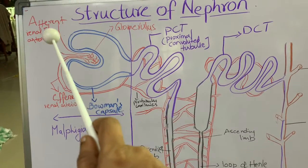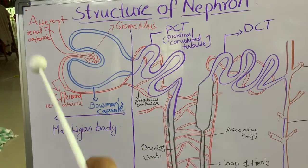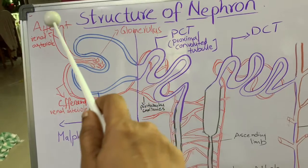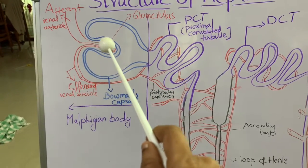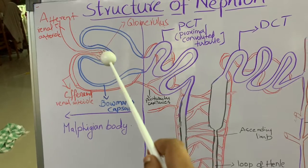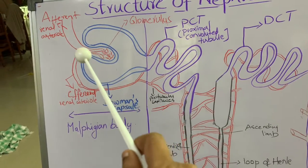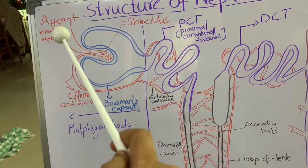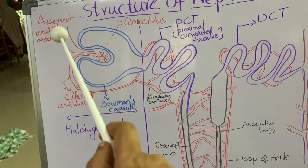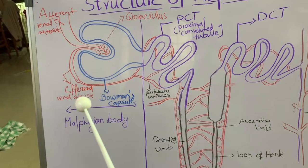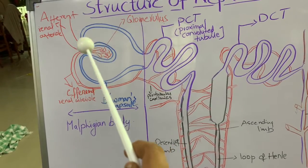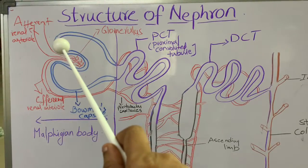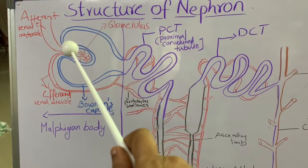The podocytes surround the capillaries of the glomerulus. The glomerulus is formed by two arterioles — the afferent arteriole, which is a branch of the renal artery. The afferent arteriole enters the glomerulus and divides into numerous capillaries, which then unite and form the efferent arteriole. Notice the difference in diameter between the afferent and efferent arterioles — this creates pressure in the glomerulus for filtration.